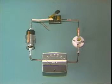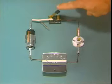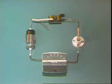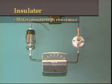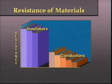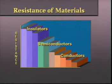Now what if we use the plastic strip in place of the copper wire? When the switch is closed, nothing happens. The plastic is, of course, an insulator, a material with high resistance. Materials are generally either conductors or insulators, depending on their atomic structure, with some materials in between known as semiconductors.